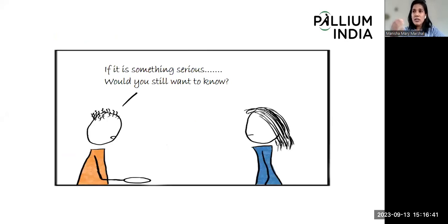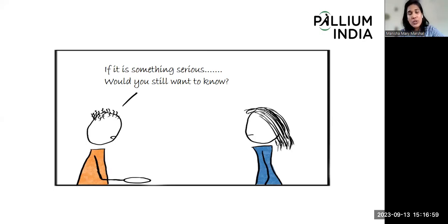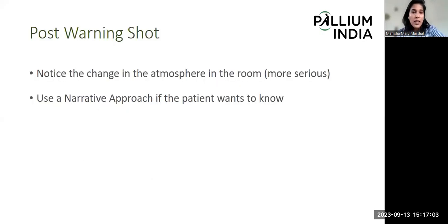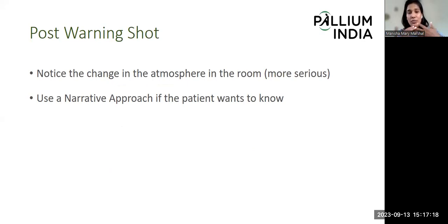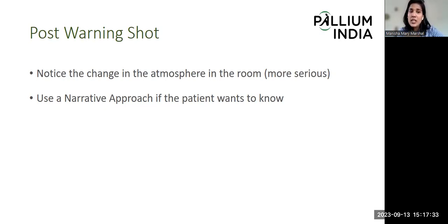A warning shot is given right before the bad news is actually broken to the patient. It can go like: 'If it is something serious, would you still want to know?' After giving the warning shot, notice the change in the atmosphere in the room. By that point, the patient gets an idea that this is something serious. Then understand the change in atmosphere. If the patient's non-verbal cues or direct words confirm they want to know, use a narrative approach.